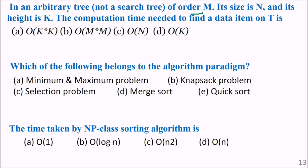In an arbitrary tree — not a search tree — of size n and height k, the computation time needed to find a data item is order of n, since it is not a search tree and you may need to scan all nodes.